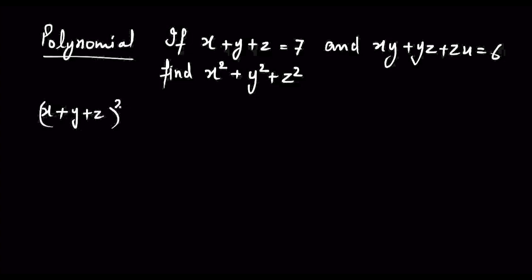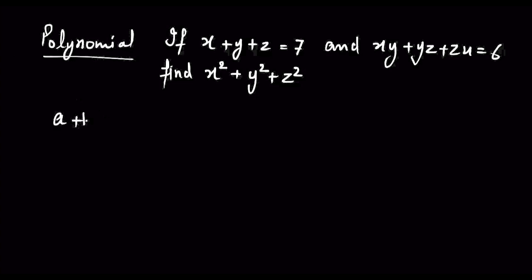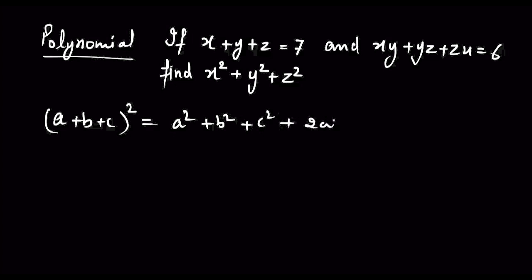यहाँ x, y, z हैं तो इसको आप a plus b plus c ले सकते हैं। a plus b plus c whole square is equal to a square plus b square plus c square plus 2ab plus 2bc plus 2ca।